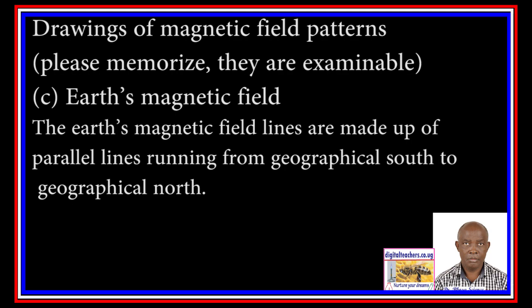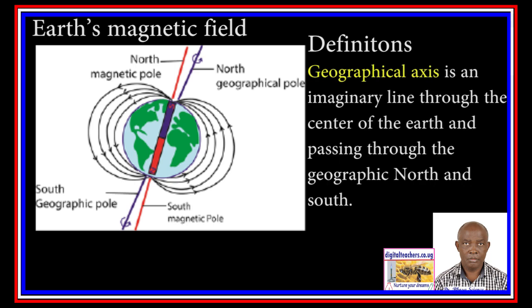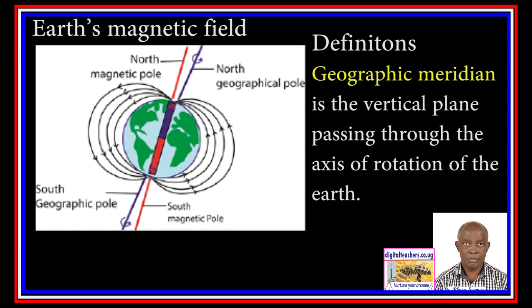Earth's magnetic field lines are a set of parallel lines running from geographical south to geographical north, as shown below. The magnetic axis is the imaginary line passing through the Earth's magnetic north and south poles. The geographical axis is an imaginary line through the center of the earth, passing through the geographic north and south. Magnetic meridian is a vertical plane containing the magnetic axis. Geographical meridian is a vertical plane passing through the axis of rotation of the earth.